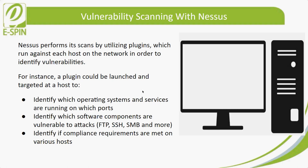Nessus Pro performs its scan by utilizing plugins which run against each host on the network to identify vulnerabilities. For instance, a plugin can be launched targeting a host to first identify which operating system and services are running, second identify which software components are vulnerable to attack — such as FTP, SSH, or SMB — and third identify if compliance requirements are met on various hosts.